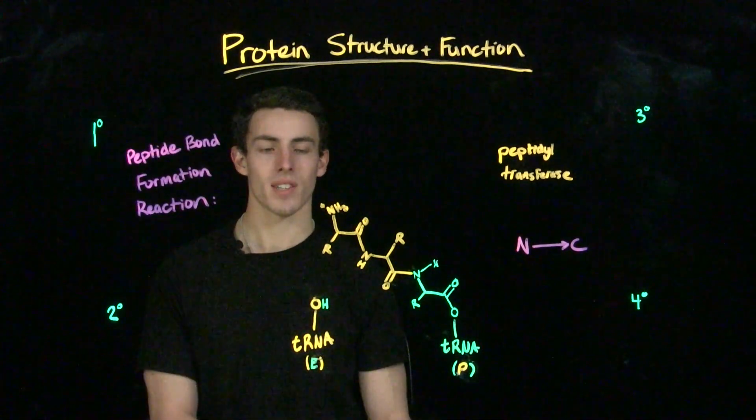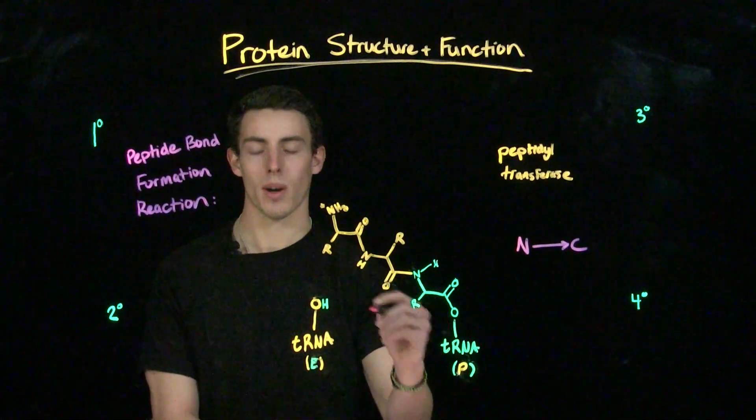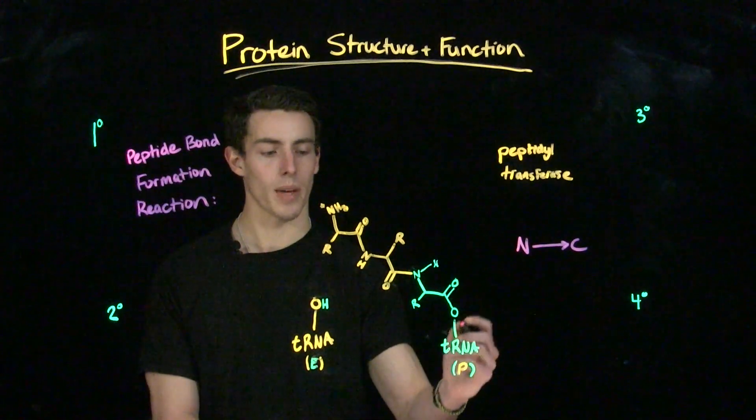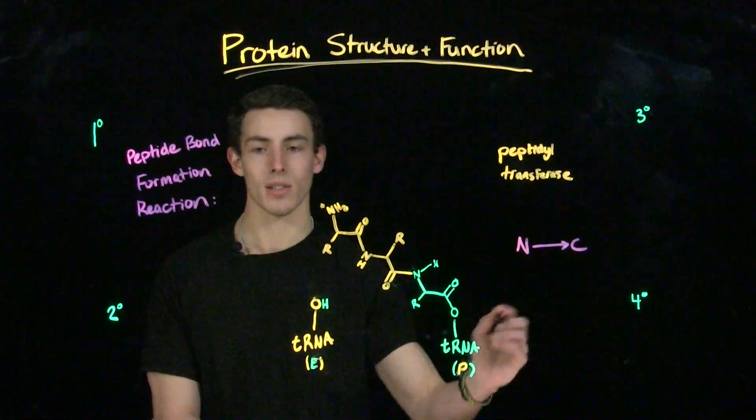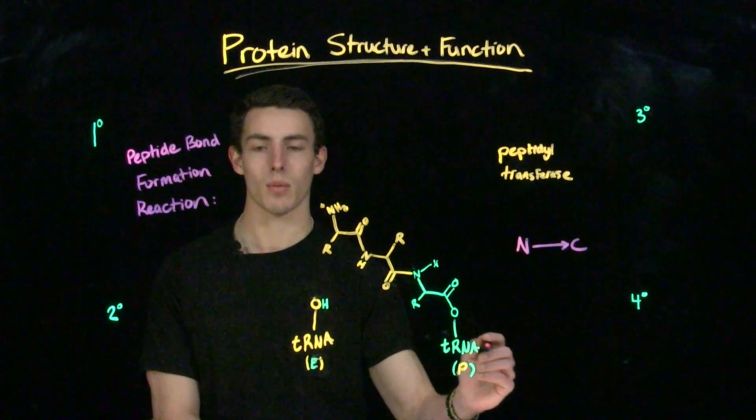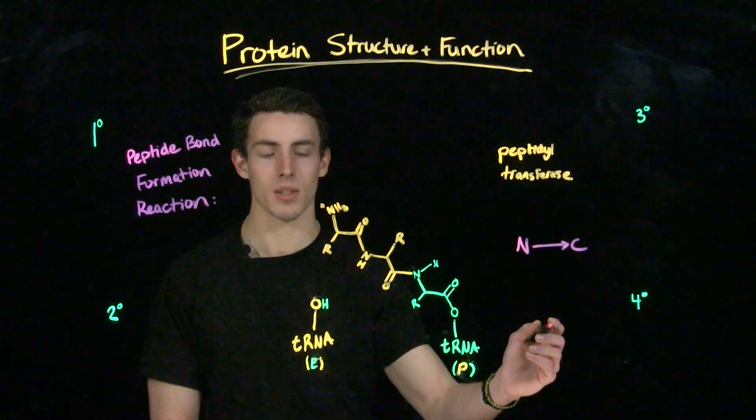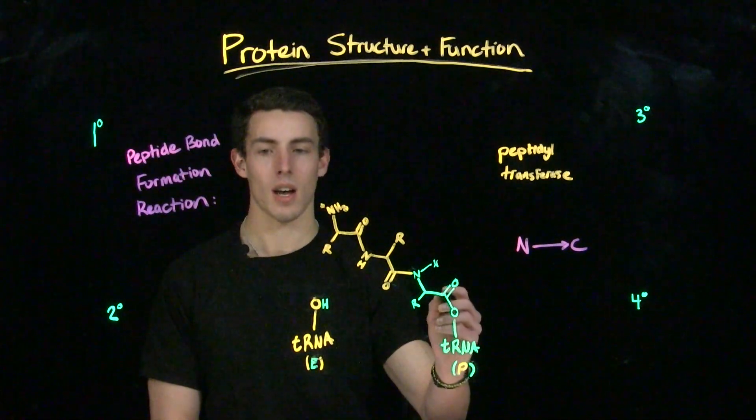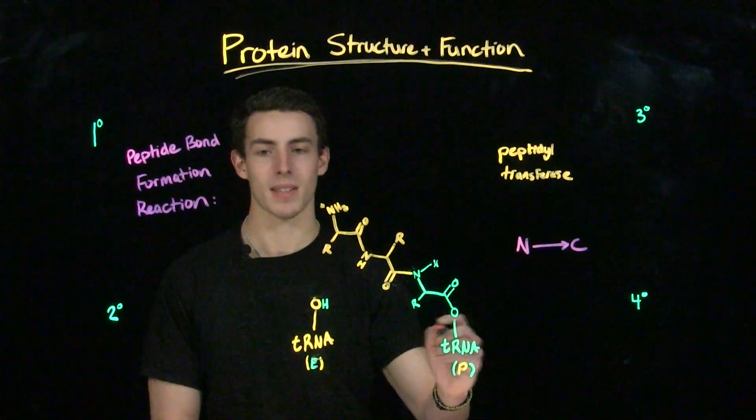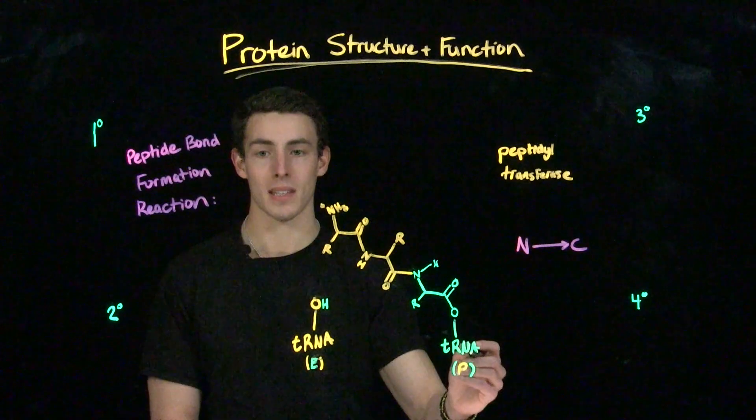As translation continues, we're going to continue doing this process over and over again, where we have charged tRNA that enter into the aminoacyl site, and then we're going to see the amino group on the amino acid in the aminoacyl site is going to attack the C-terminus of the polypeptide chain that's held by the tRNA in the peptidyl, or the P-site.